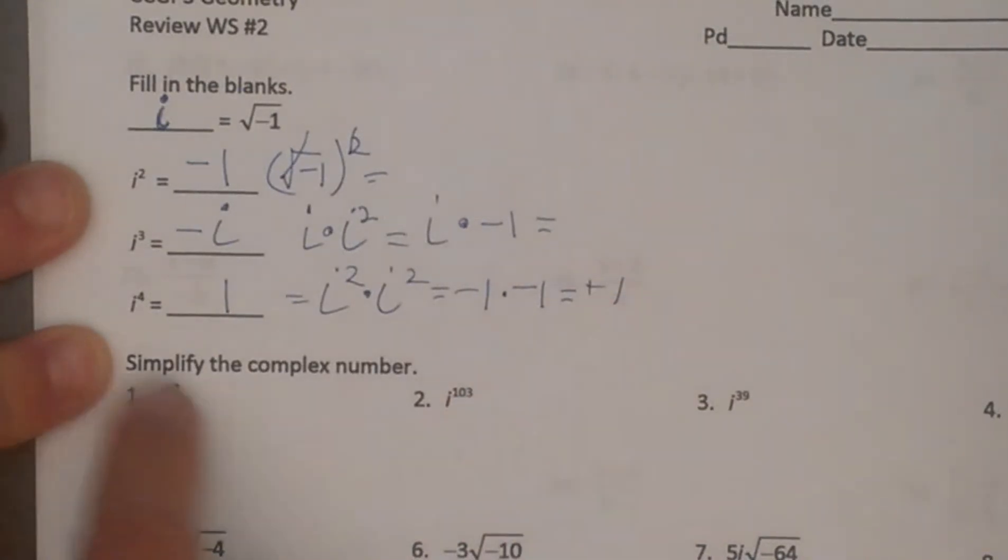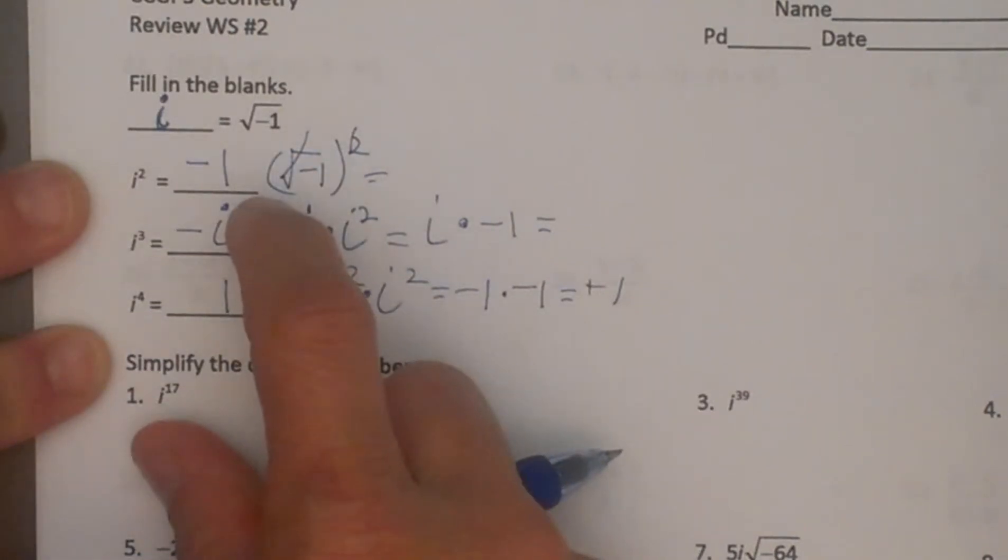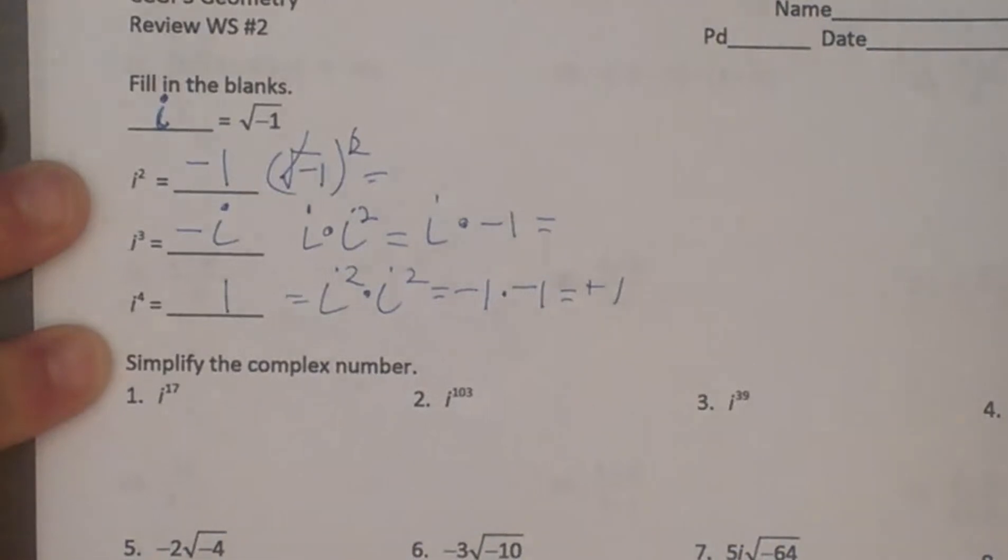Now i to the fifth will end up being i. i to the sixth is negative one. i to the seventh is negative i, and i to the eighth is one. It keeps repeating all the way through the pattern.